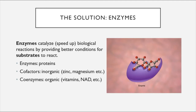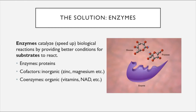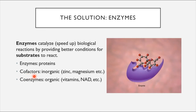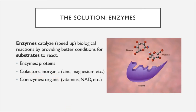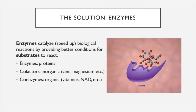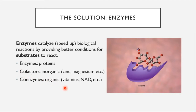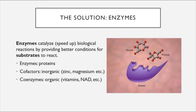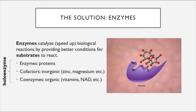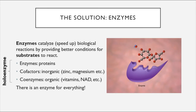Enzymes are composed primarily of proteins, but they can also include helper molecules that are not themselves composed of protein. Cofactors are one type of helper molecule—these are inorganic particles such as zinc, magnesium, and typically other metallic ions, and they help the enzyme do its job more efficiently. Coenzymes are small organic molecules that perform a similar function; this includes things like vitamins and NAD. Together, the enzyme along with any cofactors and/or coenzymes involved are called the holoenzyme.